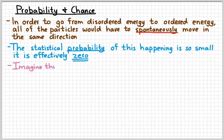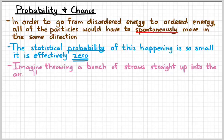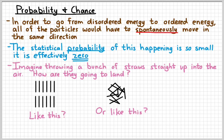To kind of give you an example, imagine that you took a handful of straws and you just tossed them straight up into the air. How are they going to end up landing on the ground? Well, one possibility is that they land ordered, like in a nice little row. The other possibility is that they land kind of all jumbled together, pointing different directions, scattered out. So the question is, which one's more likely? And the one on the right is the more likely outcome.